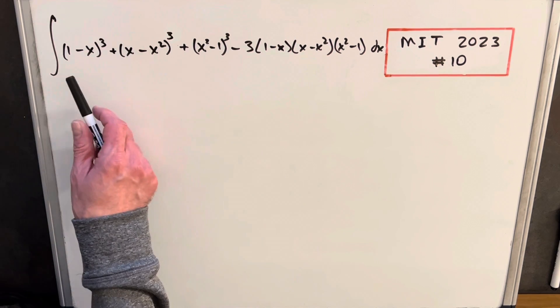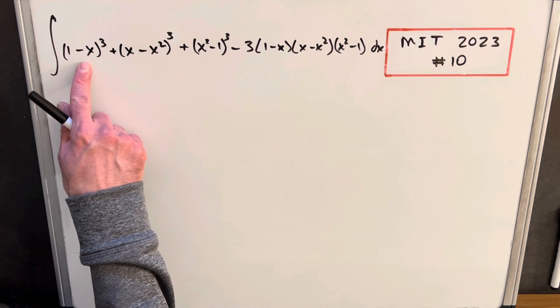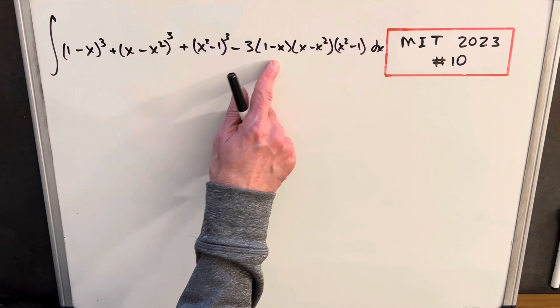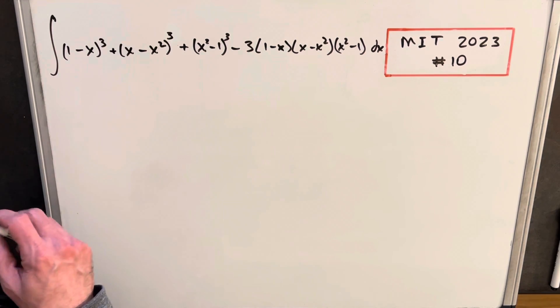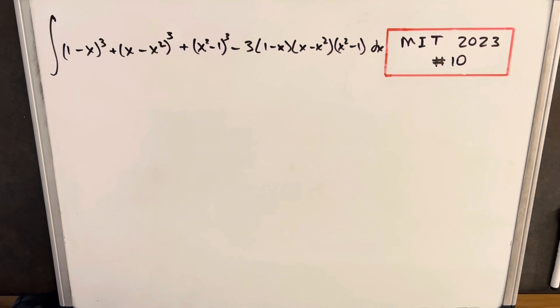And what I want to notice is we have some commonalities. Like we have 1 minus x here, 1 minus x here. Each of these terms is repeated in the integral. And so I think what we can do, maybe if we look at a couple of these terms, we can manipulate it into something a little more manageable.